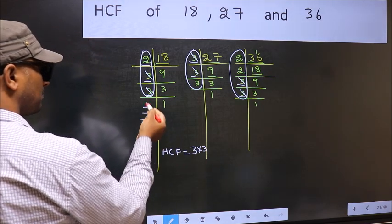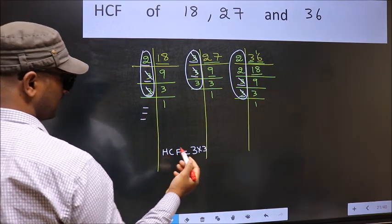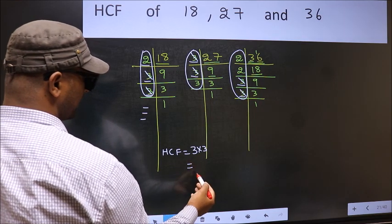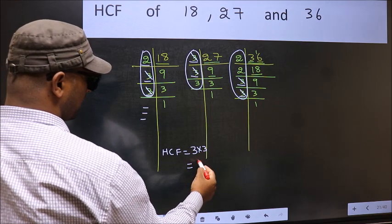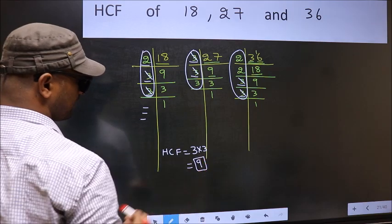No more numbers have been left out. Therefore, our HCF is 3 times 3 equals 9. 9 is our HCF.